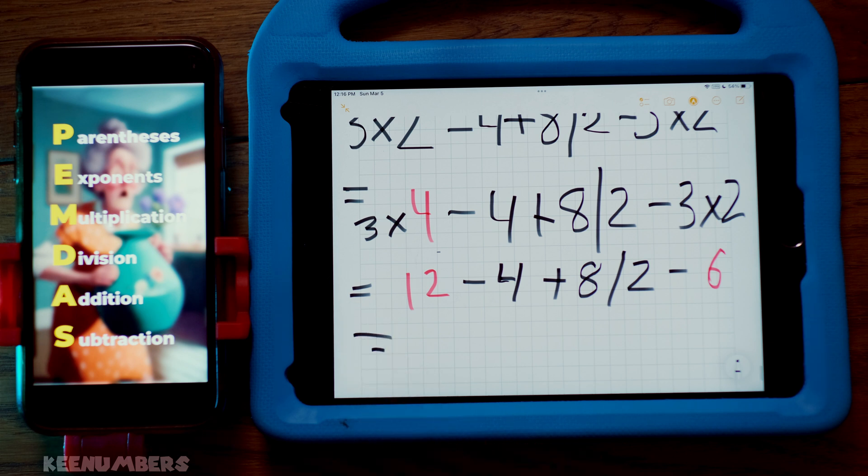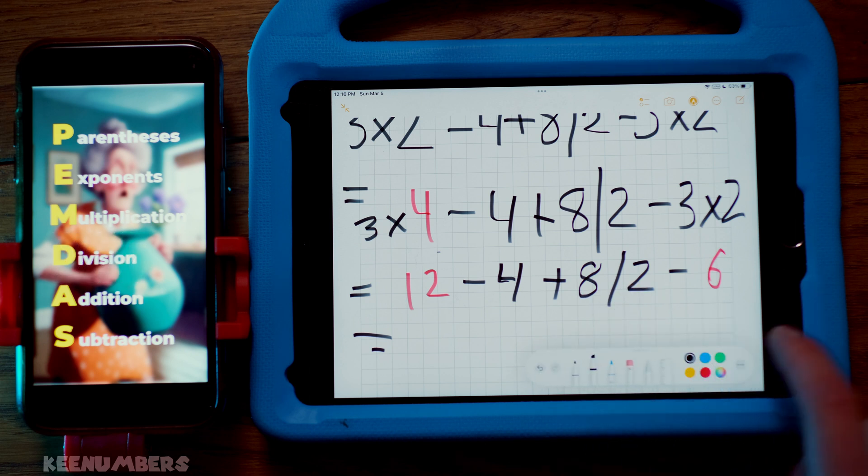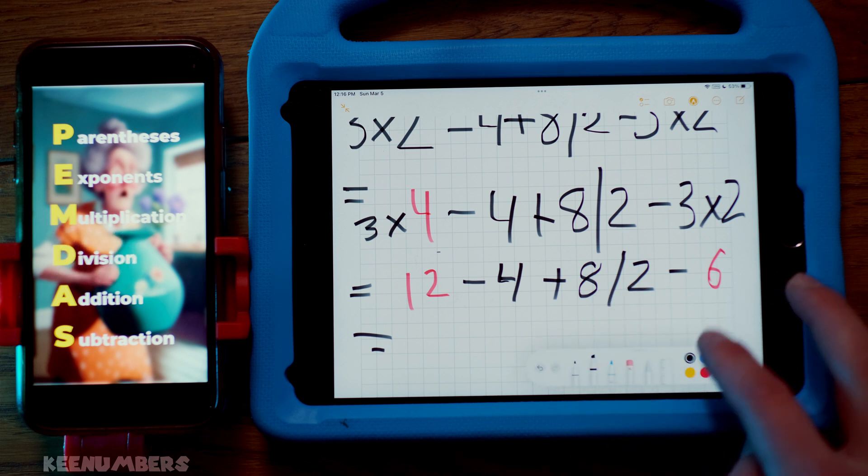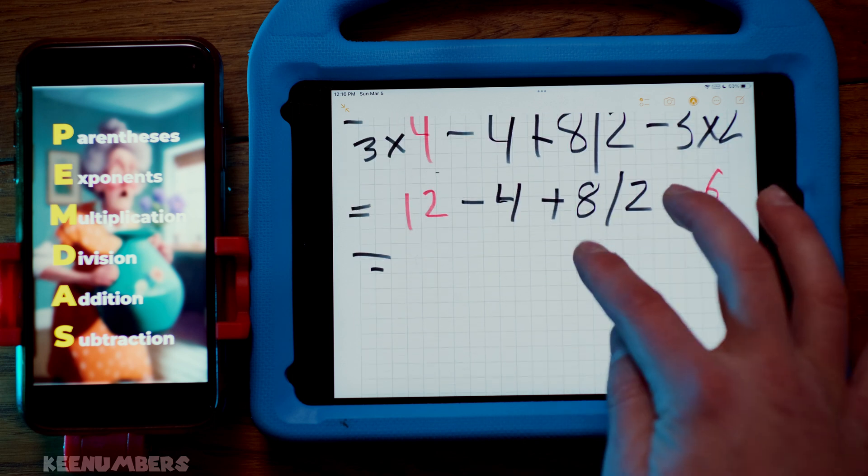Now we have to divide. D comes next, division. So we are going to address eight divided by two. Well, you already know the answer to that. Eight divided by two. How many twos going to eight? Four.